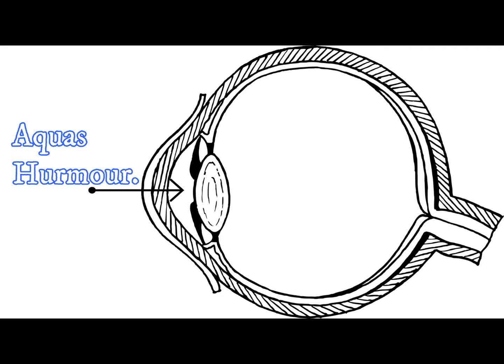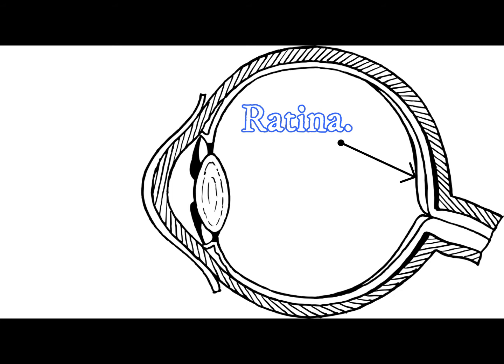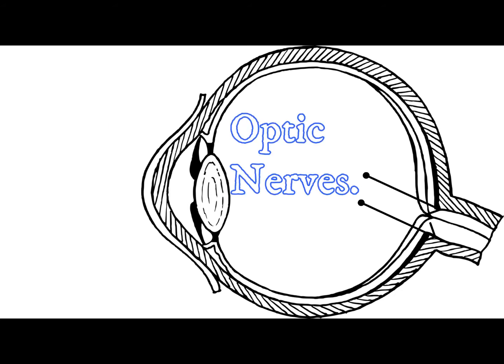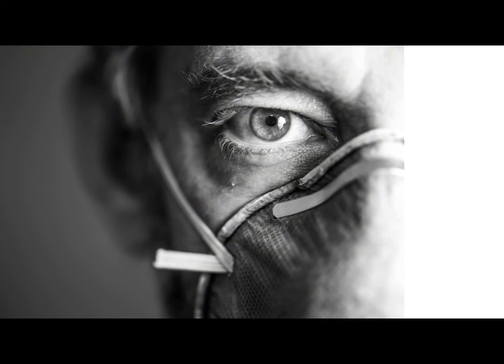Then there is retina, where the rays of light converge and from which electrical signals appear and are carried to the brain. Many things happen, we will discuss it later in this video. The inner part of the eye is covered with vitreous humor and there are two optic nerves. This was the structure of human eye.